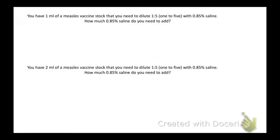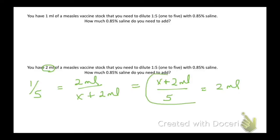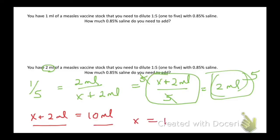Let's see how that works if you have 2 mils of vaccine with the same 1 to 5 dilution. We set up the formula: 1 over 5 equals 2 mils over x plus 2 mils. Multiply both sides by x plus 2 mils to get x plus 2 over 5 equals 2 mils. Then multiply both sides by 5. So x plus 2 mils equals 10 mils, which means x equals 10 minus 2, or 8 mils.